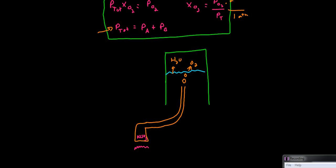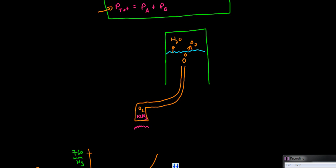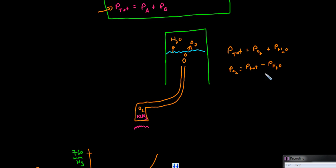Partial pressure is sometimes relevant when collecting gases by bubbling through water. For example, to collect oxygen you might decompose potassium chlorate by heating. Oxygen is released and collected over the water, but there's also going to be some partial pressure of water vapor above the liquid water. The total pressure equals the pressure of oxygen plus the pressure of water. So if you want just the pressure of oxygen, that would be the total pressure minus the pressure of water — you need to separate out the partial pressure of water to get the pressure of any other gas collected above water.